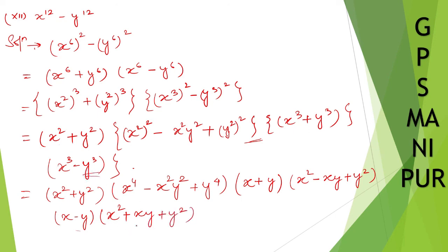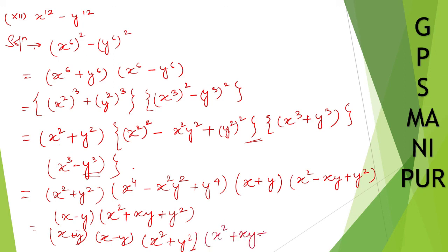I have split it here — I hope the answer is correct, you can just check it out. If I write it in order, the final factored form is: x plus y, times x minus y, times x squared plus y squared, times x squared plus xy plus y squared, times x squared minus xy plus y squared, times x to the power 4 minus x squared y squared plus y to the power 4. This is how you write it. I hope you understood, and I hope the answer is correct. Thank you so much, we will meet in the next video.